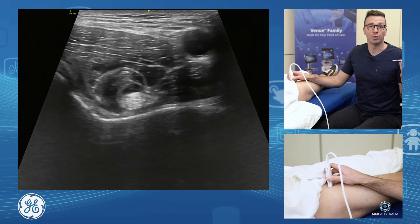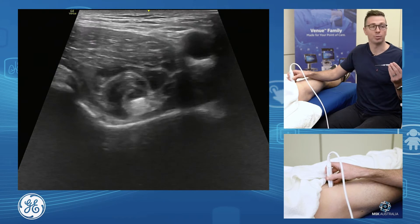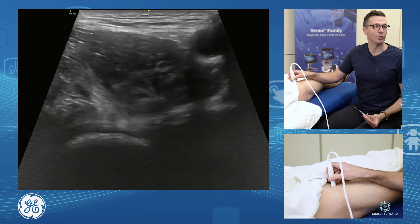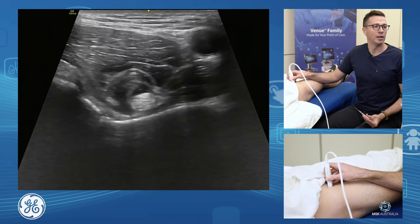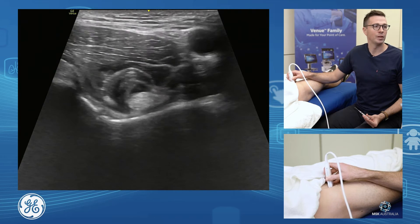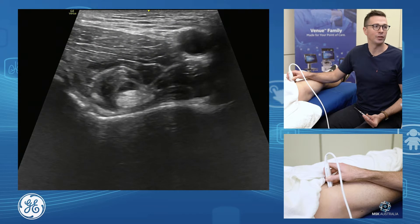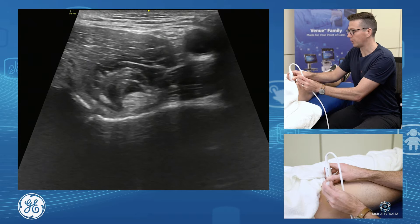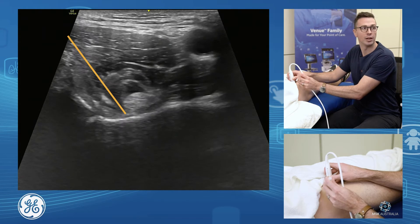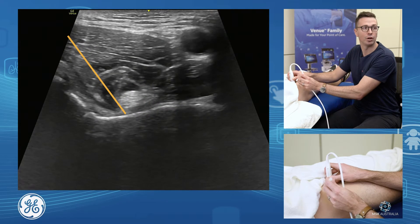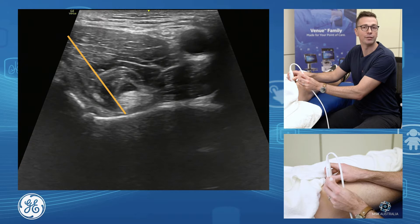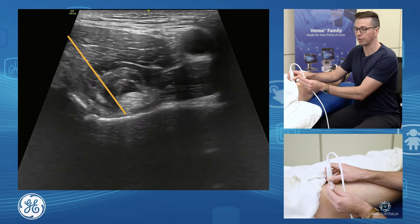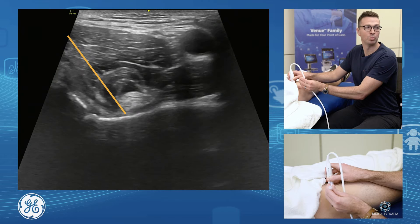If we were to do an iliopsoas bursal injection, this is the approach we would use. Find your iliopsoas tendon sitting at the top — find your femoral head, acetabulum, line yourself up, fix your anisotropy, and bring your needle in at about a 45-degree angle laterally. Slip down to hit the top of the acetabulum, slipping underneath the tendon and onto the acetabulum to perform your iliopsoas bursal injection.